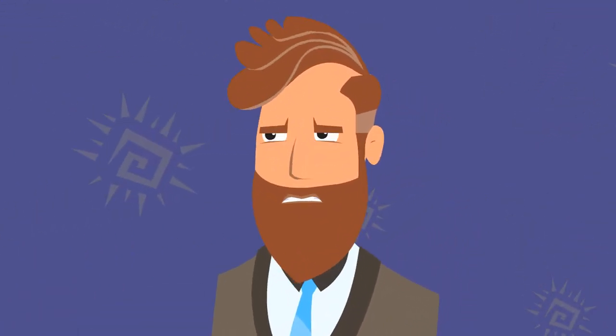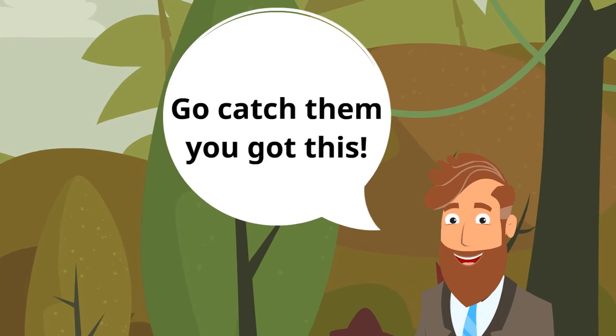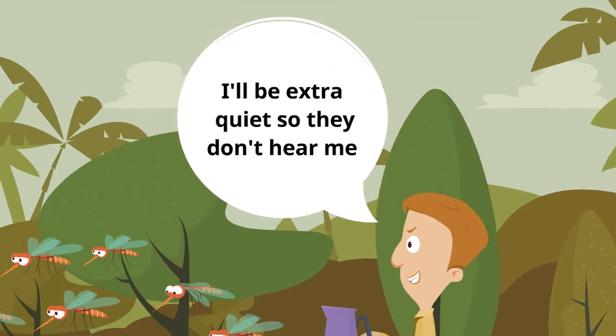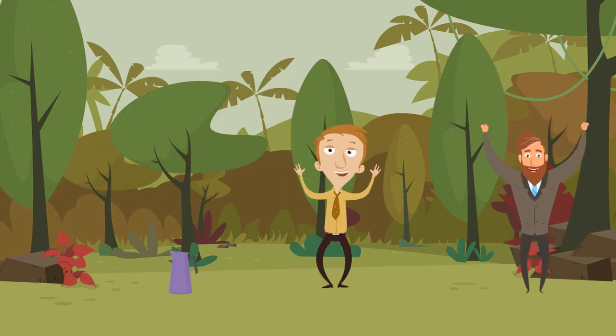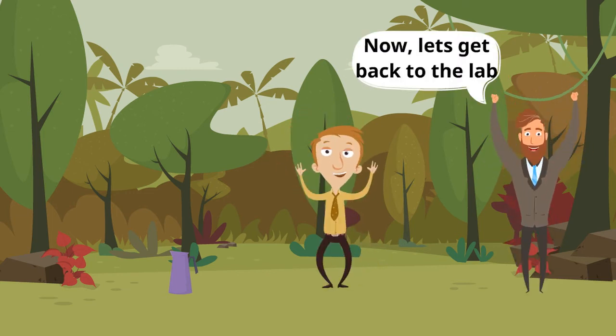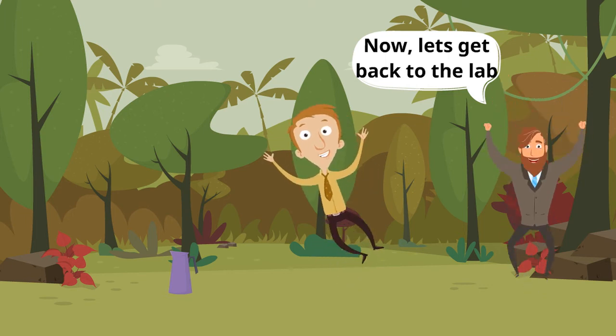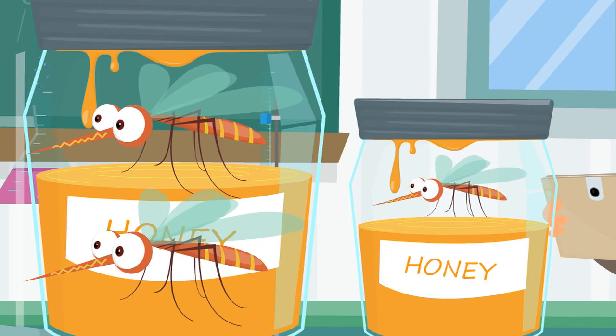He then decided to experiment on fruit flies. These flies quickly proved to be great because they were cheap to maintain, had fast life cycles and laid eggs every 12 days.